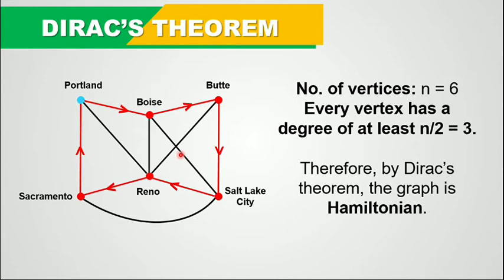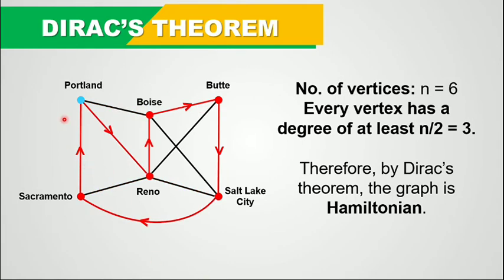So again, this graph is Hamiltonian because it has met the conditions of Dirac's Theorem and it also contains a Hamiltonian circuit. We could also have this one: starting at Portland, then going to Reno, to Boise, to Butte, to Salt Lake City, to Sacramento, and then back to Portland. So this graph is Hamiltonian.